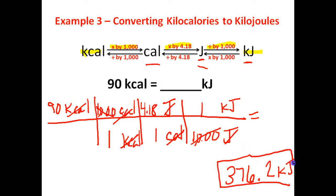So 90 kilocalories is the same thing as 376.2 kilojoules. Let's take a look at the next one here.